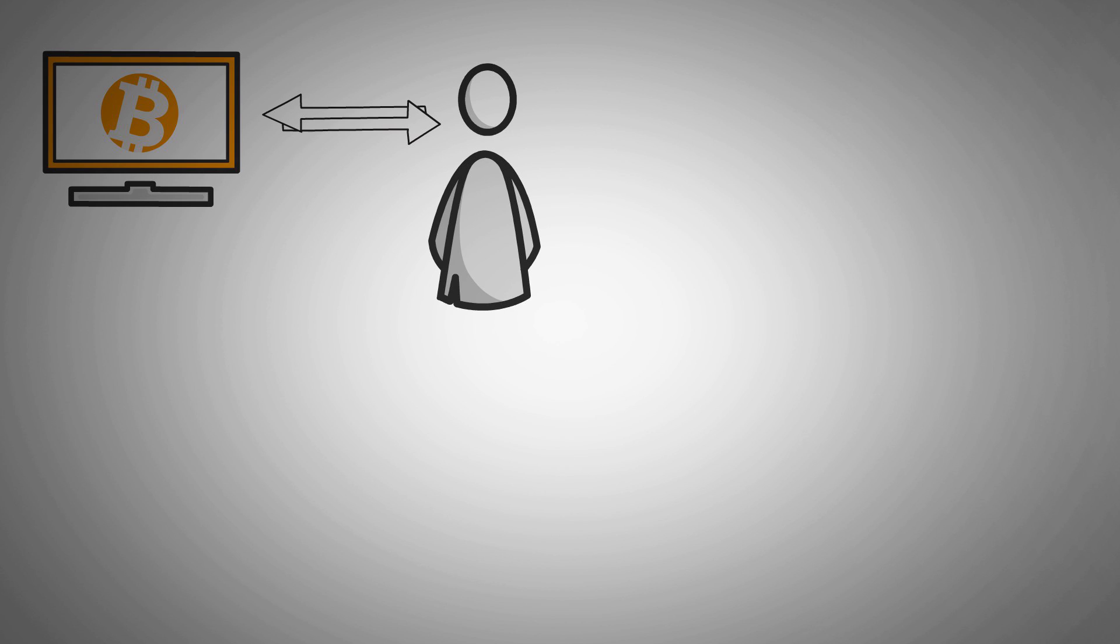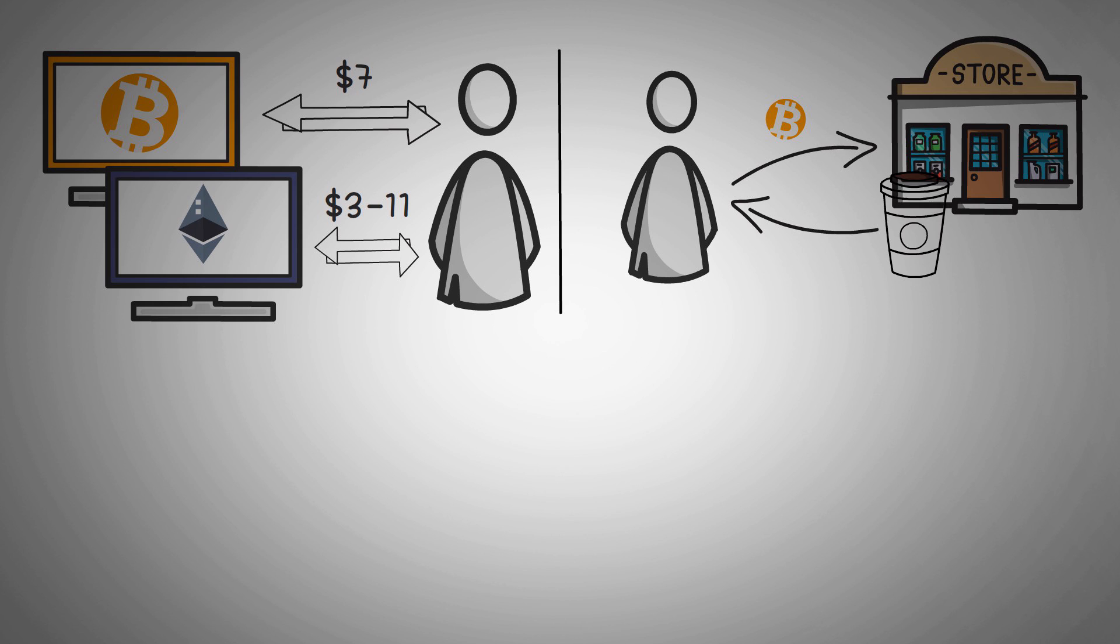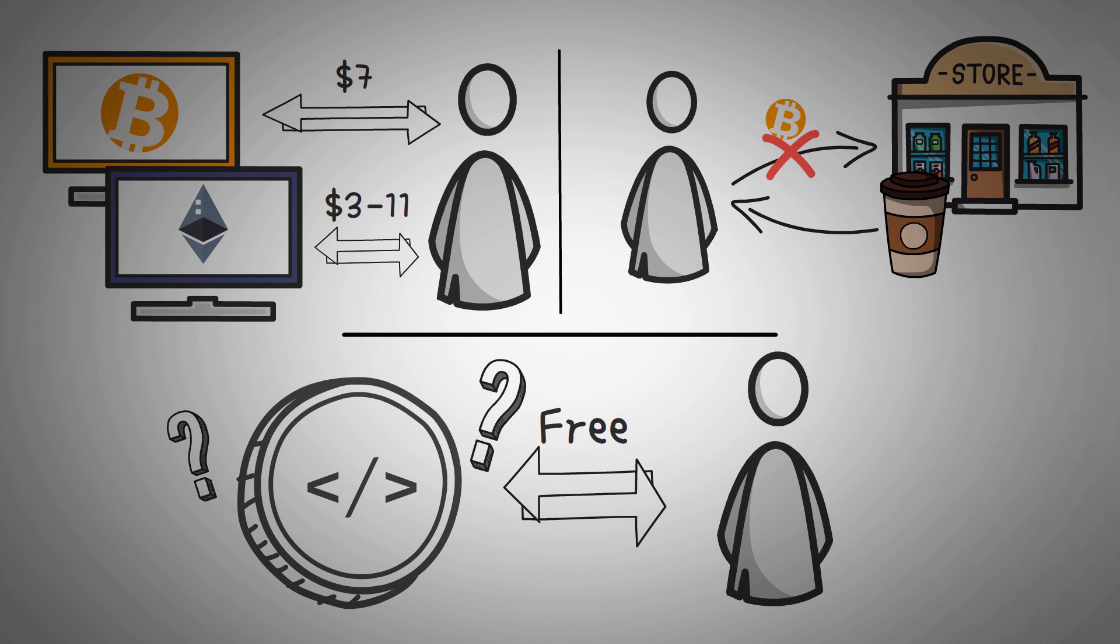Bitcoin fees have been averaging around $7 per transaction, and Ethereum's fees have been around $3 but sometimes jump up to $11, depending on how busy the network is. This means it's not yet feasible to buy a cup of coffee or some gum at your local store. But what if there was a cryptocurrency out there that didn't have any fees? A crypto where it was free to send and receive any amount.